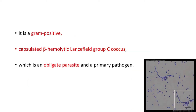Streptococcus equi equi is a gram-positive, capsulated, beta-hemolytic, Lancefield group C coccus. It is an obligate parasite and a primary pathogen. Here is a picture of Streptococcus equi equi — a gram-positive, capsulated, beta-hemolytic coccus.